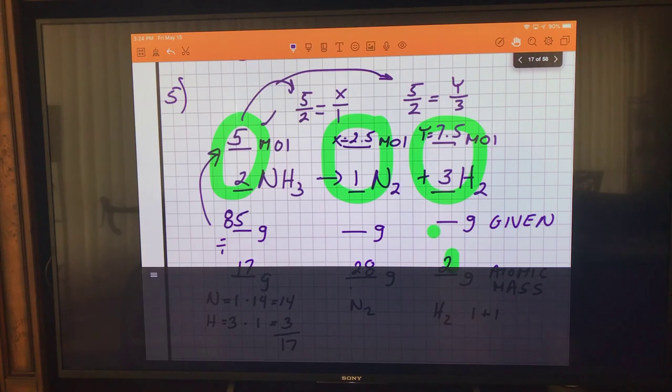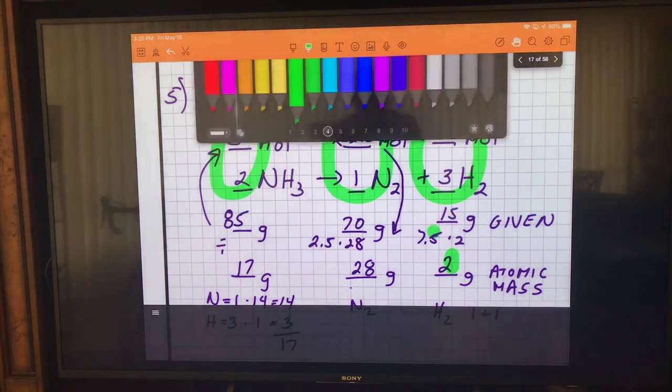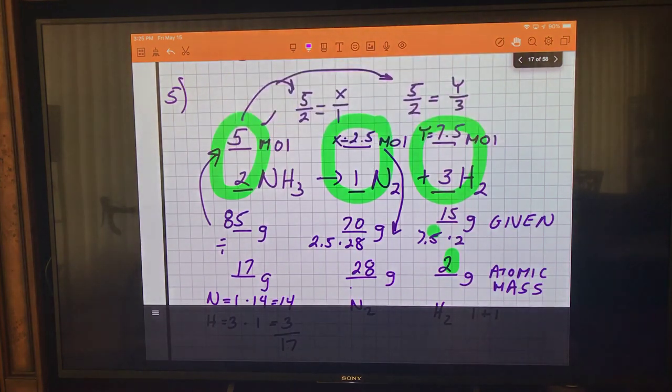All right, our last step is to do some multiplication. So we're going to take the 2.5 and multiply by 28. So 2.5 times 28, and that's going to give us 70. And on this other one, we're going to take 7.5 and we're going to multiply that by 2 and get 15.